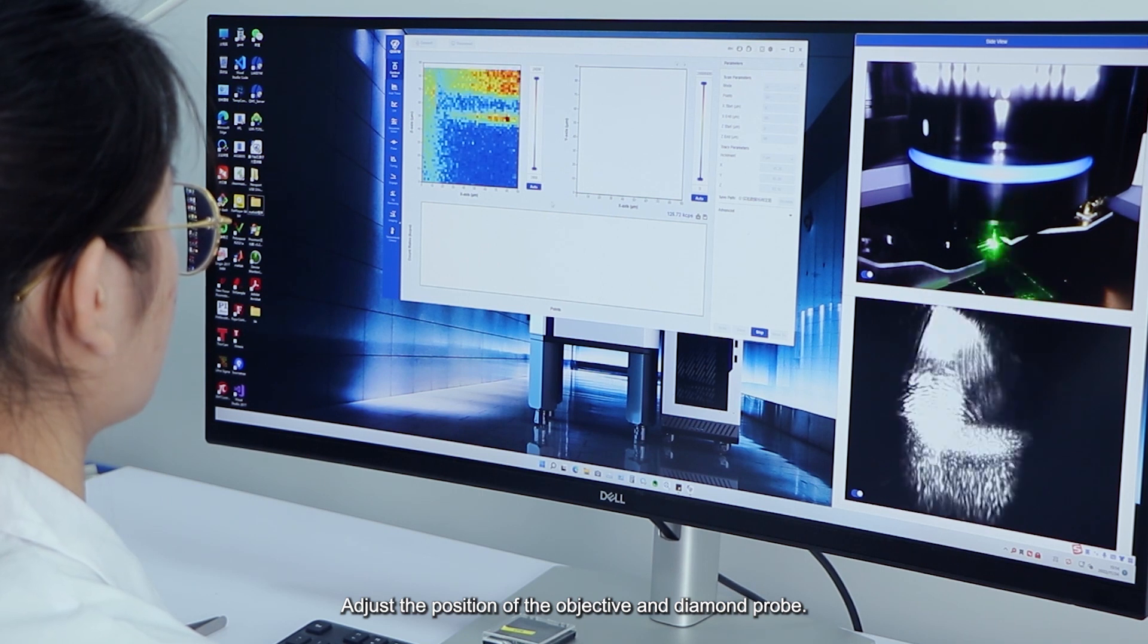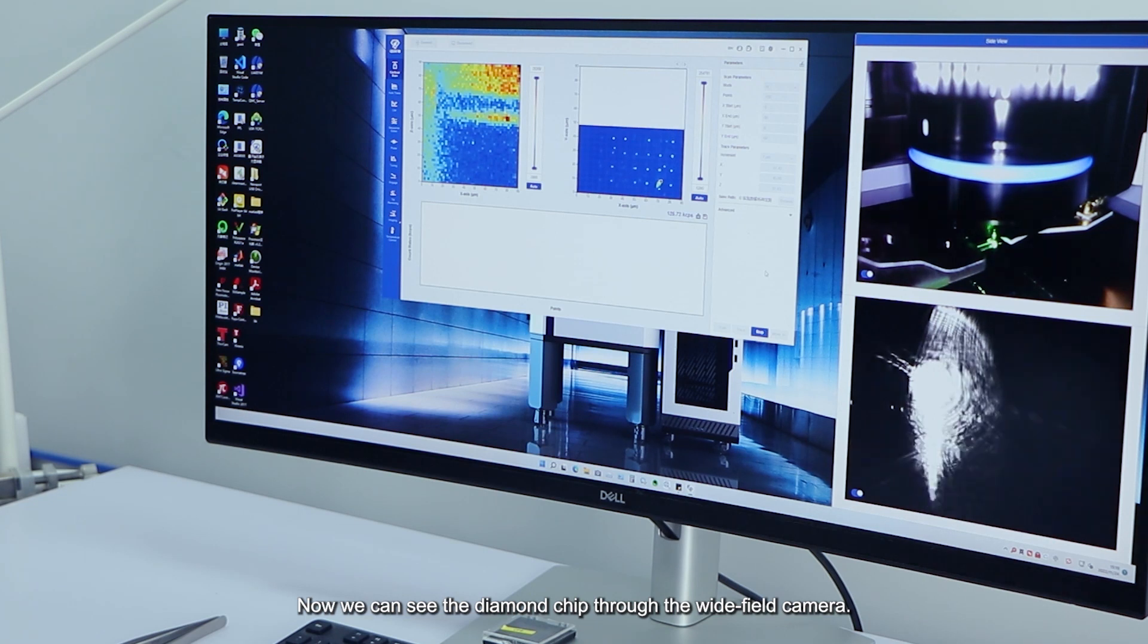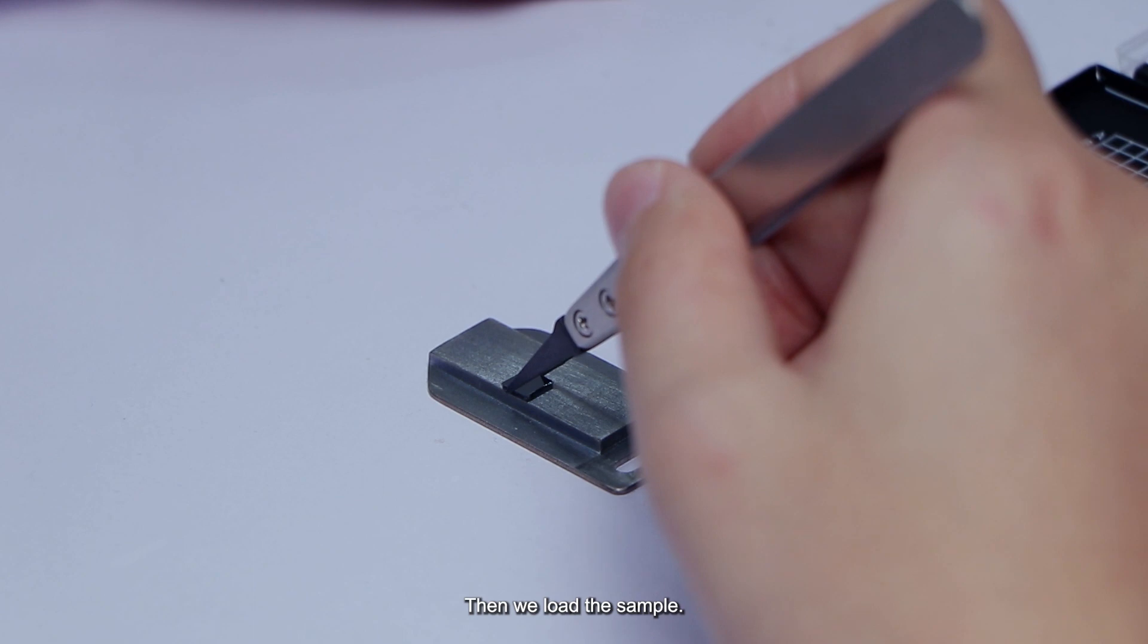Adjust the position of the objective and diamond probe. Now, we can see the diamond chip through the wide-field camera. Then we load the sample.